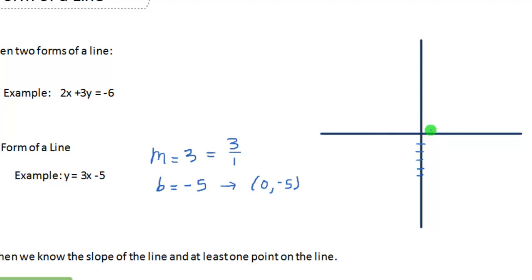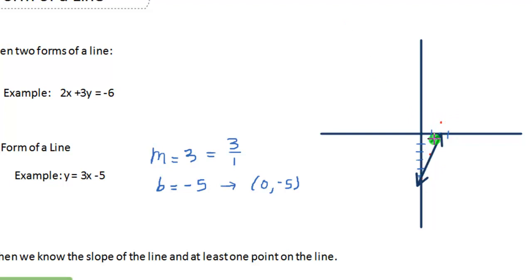Let's review that. First, graph the y-intercept on the y-axis at 0, negative 5. Then for our slope, we turn that into a fraction by putting a 1 under the 3, and that tells us we go up 3 and over 1, up 3 and over 1. Then join your points and that gives you your line. So slope intercept form is a useful form of the line.